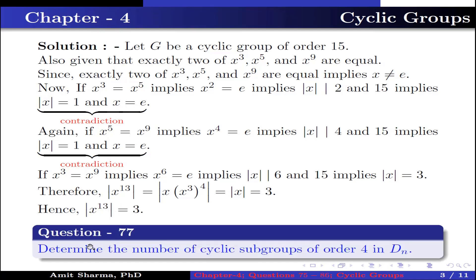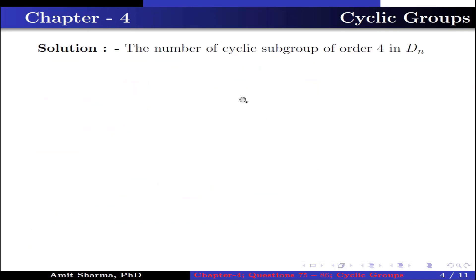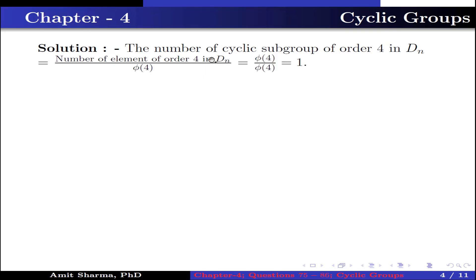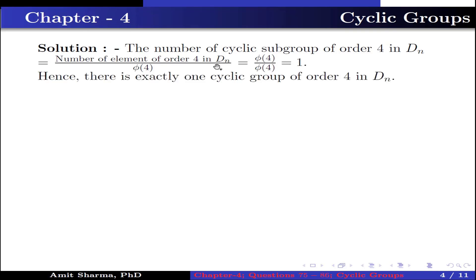Question number 77. Determine the number of cyclic subgroups of order 4 in Dₙ. The number of cyclic subgroups of order 4 in Dₙ equals the number of elements of order 4 divided by φ(4). Since the number of elements of order 4 in Dₙ is φ(4), which equals 1, there is exactly one cyclic subgroup of order 4 in Dₙ.